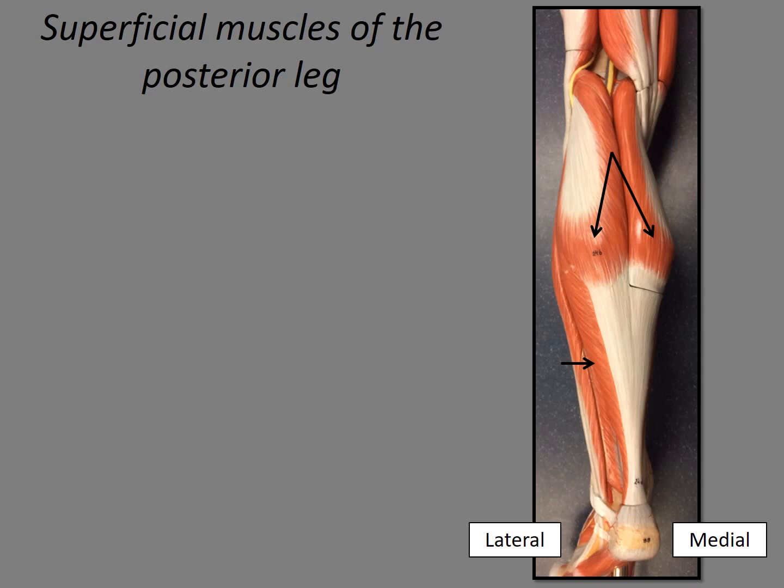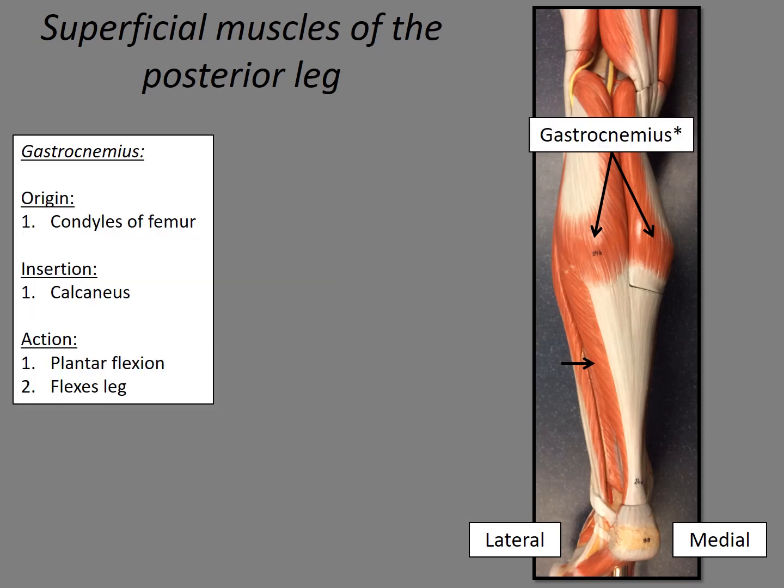Our first muscle, indicated by that double arrow, is the gastrocnemius — our calf muscle. This is a muscle we're responsible to know origin, insertion, and action. The origin is the condyles of the femur. The insertion is the calcaneus. And the action is to plantar flex — to stand up on your tippy toes — and also to flex the leg.